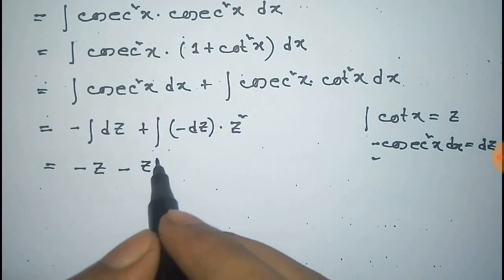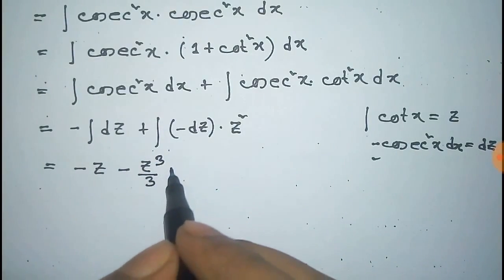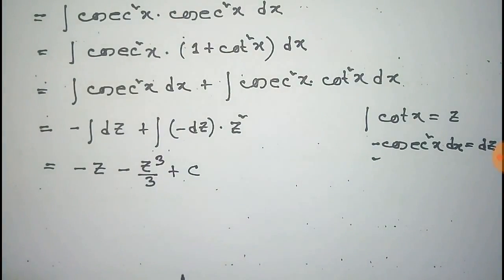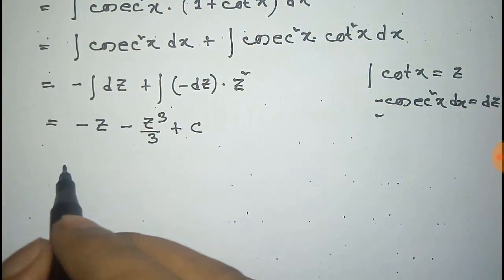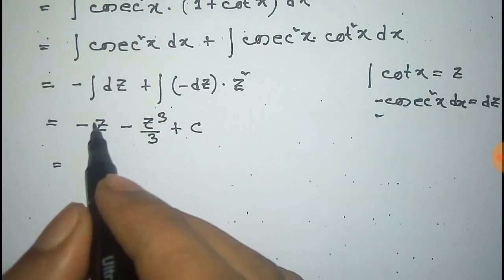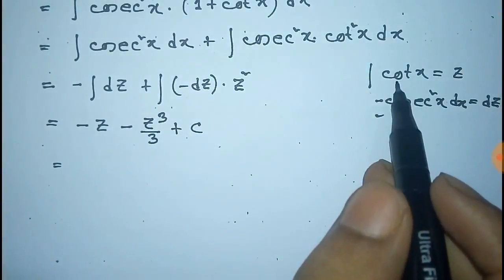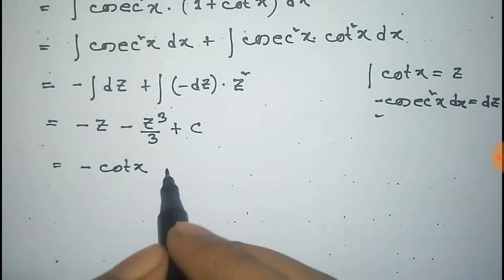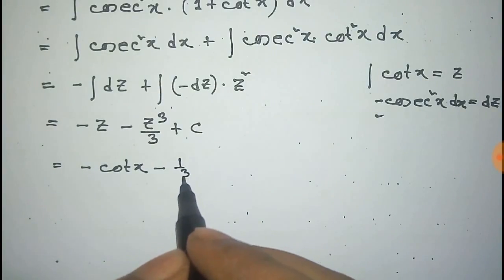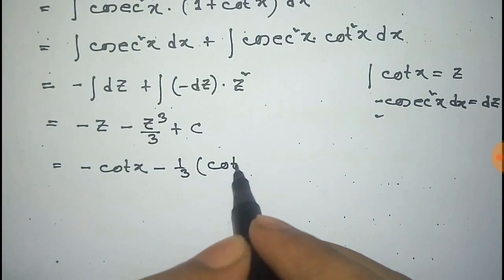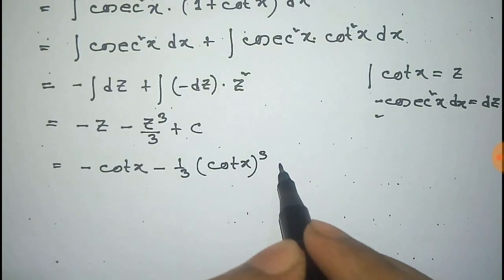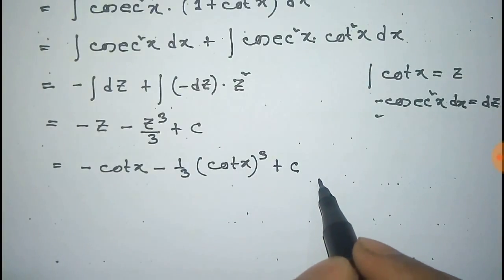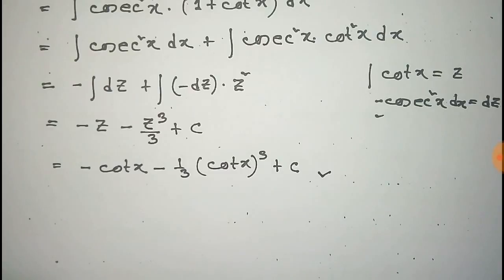The integration of dz is z and the integration of z² is z³ divided by 3, plus the constant C. Now we put back the value of z, that is cot(x): the final answer is minus cot(x) minus (1/3)cot³(x) plus C. This is the integration of cosec to the power 4x.